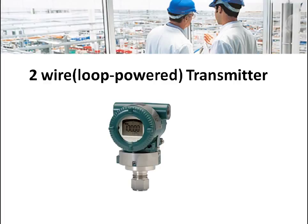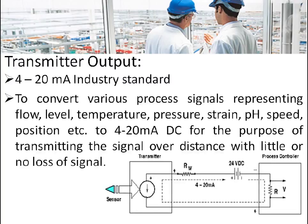This transmitter will provide electrical output that is proportional to the incoming physical variable signal. The most common output of the transmitter is 4 to 20 mA because it has the advantage of transmitting the signal over long distance with little or no loss of signal. The transmitter uses the same two wires of the 24V DC power supply for transmitting the 4 to 20 mA signal. That is why it is known as loop power transmitter.